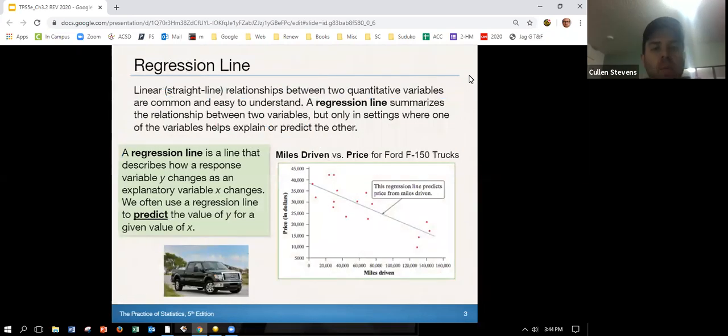So the first thing we want to talk about is what is the regression line, and depending on when you came through Algebra 2 or what they were focusing on, you might have also heard this as a line of best fit. So when you have a straight line or a linear relationship between two quantitative variables, it's very easy to understand what we have here. A regression line really summarizes that relationship between them, but only in settings where the variables help explain or predict each other.